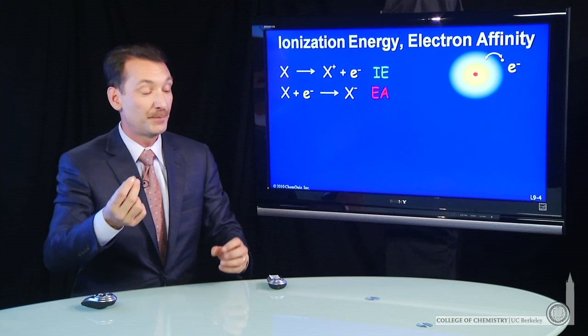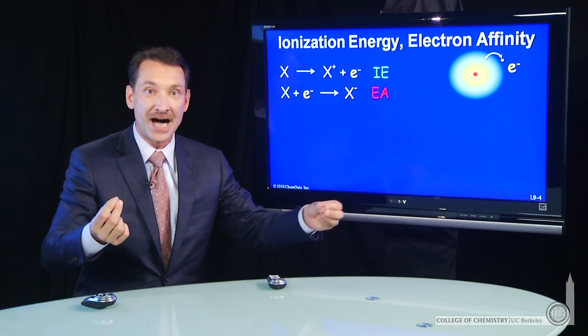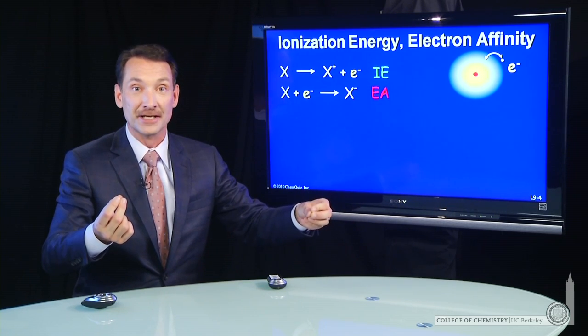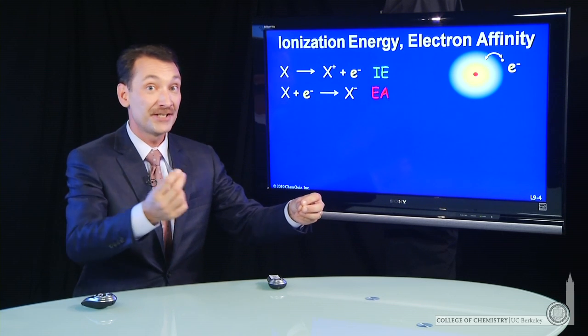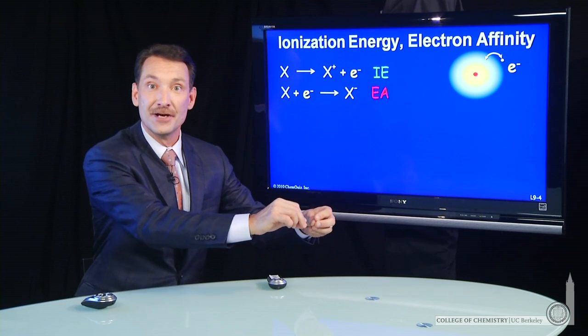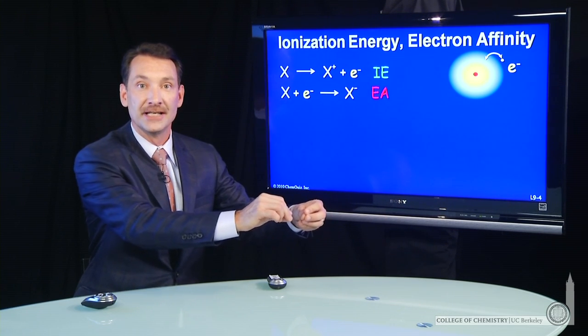And that's because an electron free in space and an atom with a positive charge at its nucleus, the most stable state for that electron to be is near that positive charge in the atom.